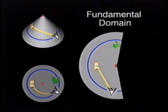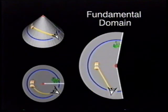This wedge is a building block for the cone and is called a fundamental domain. The two edges resulting from the cut represent a single line back on the cone.